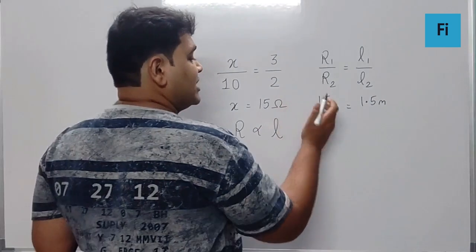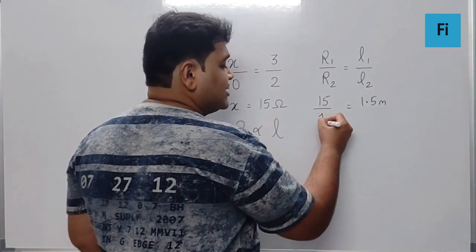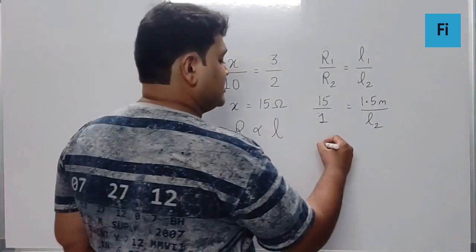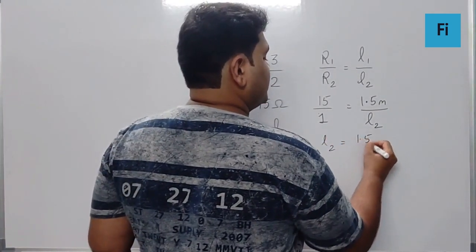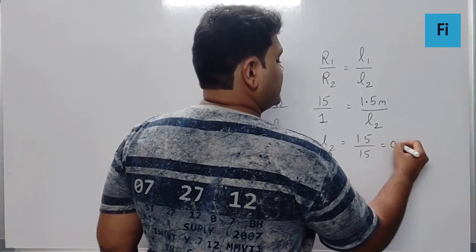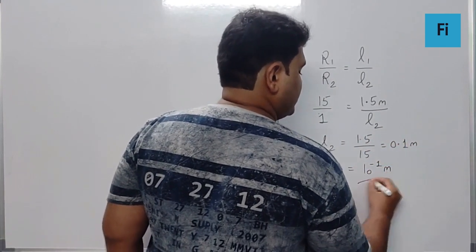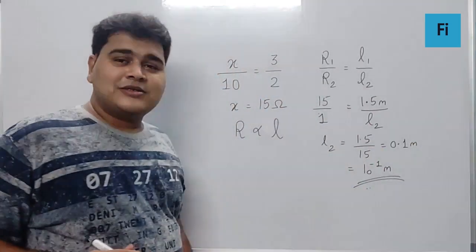Now the resistance 2 is given as 1 ohm for which length we are supposed to find. Now that means the length L2 is 1.5 by 15, which is nothing but 0.1 meter or 10 raised to minus 1 meter, which is your final answer.